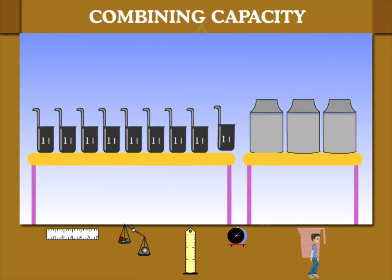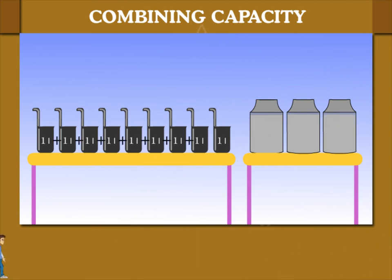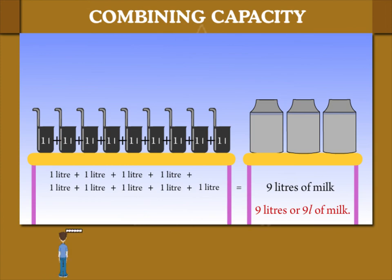There are 9 measures of 1 litre. And this means that cans have 9 litres of milk.